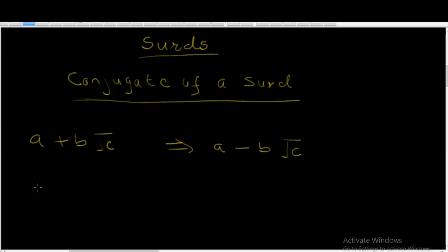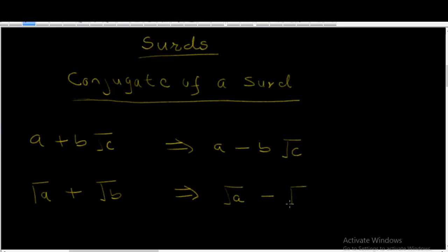Now let's take another example of how to write the conjugate of a surd. Take for example √A plus √B. The conjugate of this surd can be written as √A minus √B. Similarly, all we did here was to change the plus sign to a minus sign. That is all we need to do.